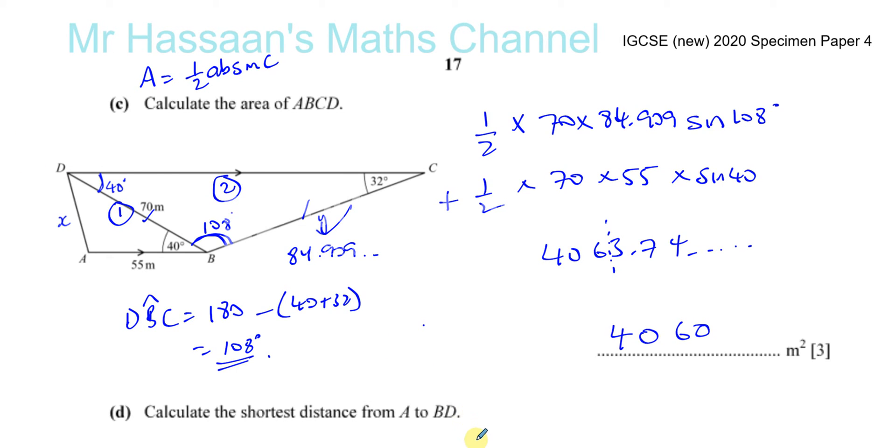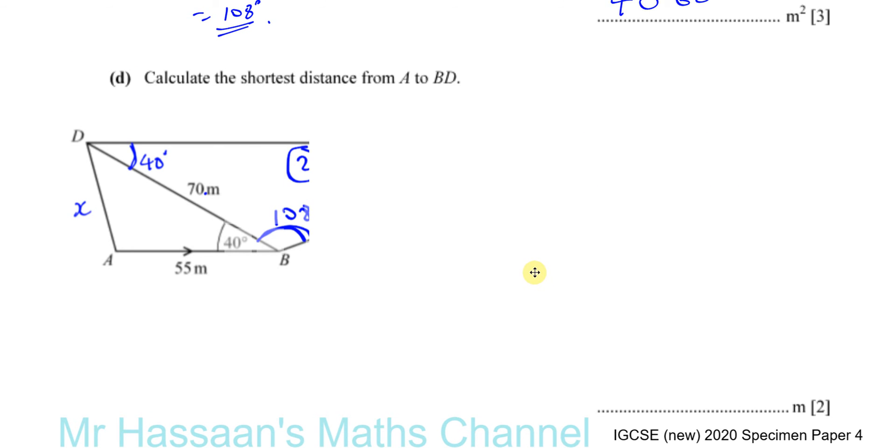And then the next part of the question, calculate the shortest distance from A to BD. Now here's A and here's BD. The shortest distance between a point and a straight line is going to be the perpendicular distance. These will all be longer. The shortest distance is when it meets it at 90 degrees, the perpendicular distance.